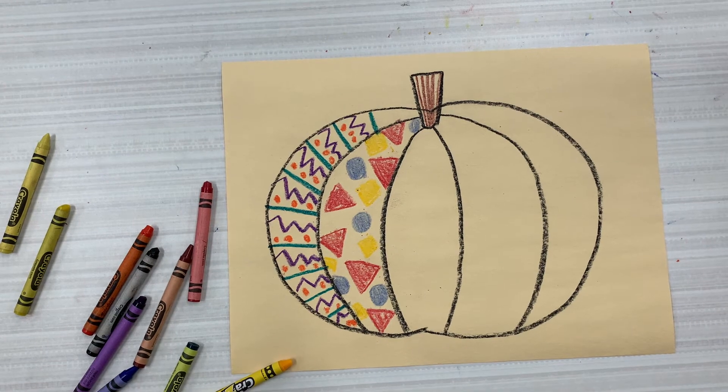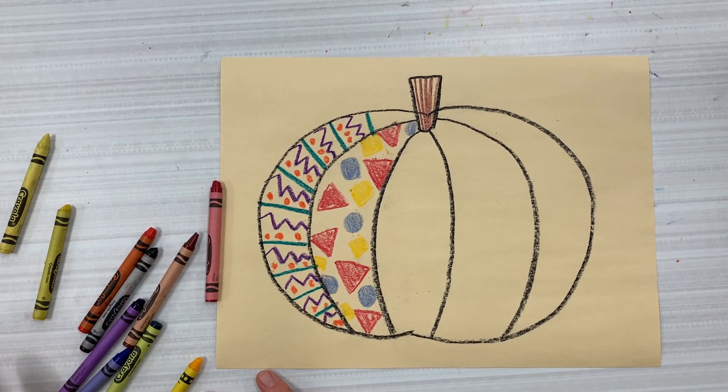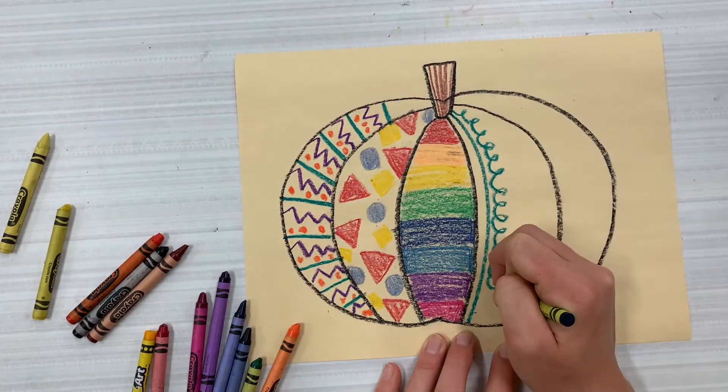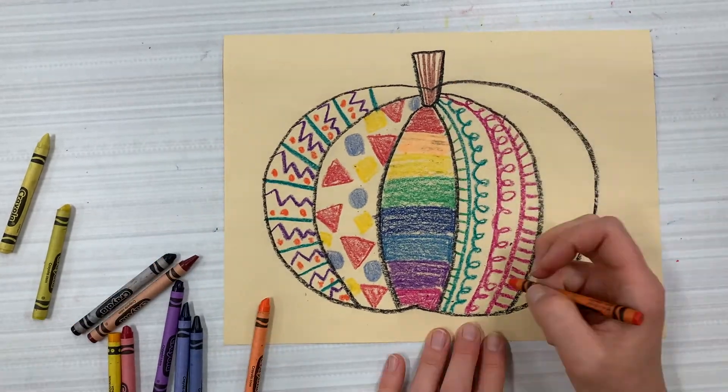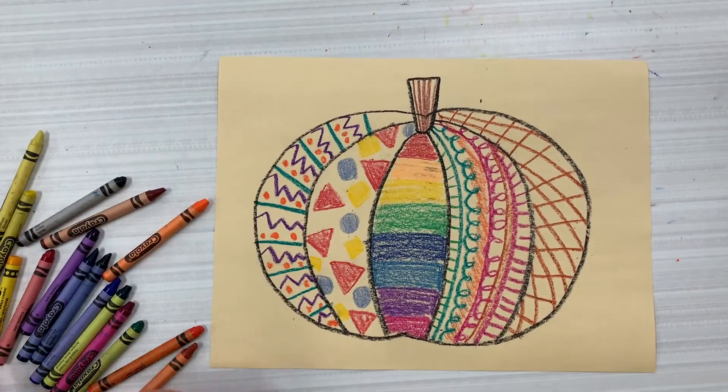Again, your patterns can look different, but I do want you to have one section that uses only secondary colors and one that uses primary colors. You could do the rainbow, whatever you want. Just take your time to make interesting patterns.